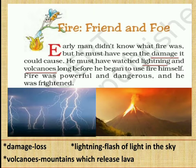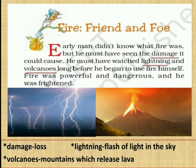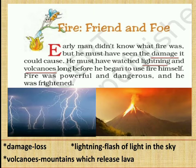Now coming to the lesson, Fire: Friend and Foe. Early man did not know what fire was, but he must have seen the damage it could cause. Damage means loss. He must have watched lightning and volcanoes long before he began to use fire himself. Lightning is the flash of light in the sky, and volcanoes are mountains which release lava. Fire was powerful and dangerous and he was frightened. Early man must have seen the damage caused by bolts of lightning and volcano eruptions.